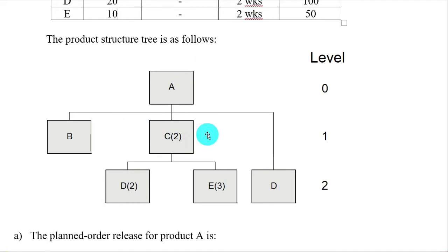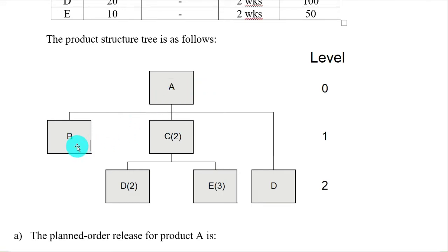The third input is the BOM, or bill of materials, also called the product structure tree. In this tree, A is the end product. To assemble one A, you need one B, two C, and one D. And to assemble one C, you need two D and three E.